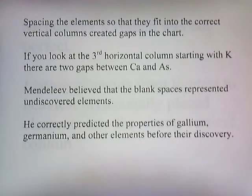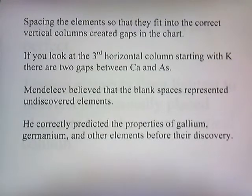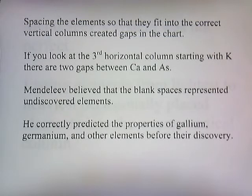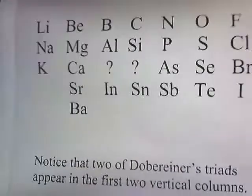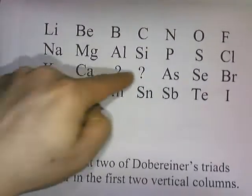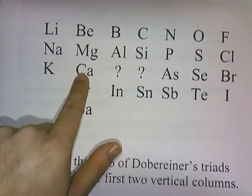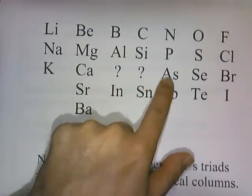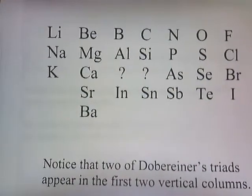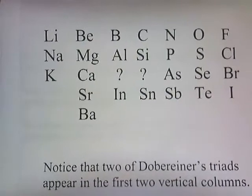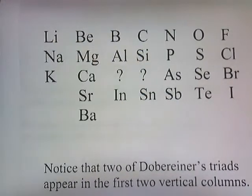Spacing the elements so that they fit into the correct vertical columns created gaps in the chart. In the third horizontal row starting with K, there are two gaps between calcium and arsenic — spots with no elements to fill them.